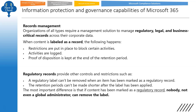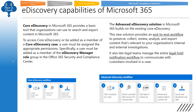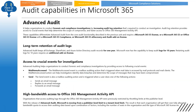When content is labeled as a record: restrictions are put in place to block certain activities, activities are locked, and proof of disposition is kept at the end of the retention period. If marked as a regulatory record, it becomes even more critical — a regulatory label cannot be removed, the retention period can't be made shorter, and most importantly, nobody — not even the global admin — can remove the label. For eDiscovery, know the difference between Core eDiscovery and Advanced eDiscovery. In the Advanced eDiscovery workflow, you add the custodian first to the case, which you don't do in Core eDiscovery — know the high-level workflow steps for both.